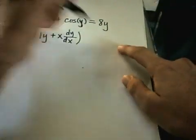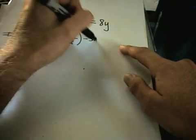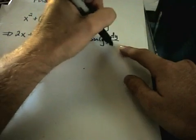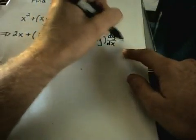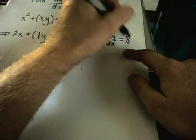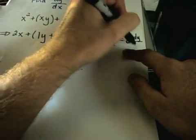Next, we take the derivative of cosine of y. That'll give us negative sine y. And again, I have to tack on my dy dx. And on the right-hand side, the derivative of 8y will be 8 dy dx.